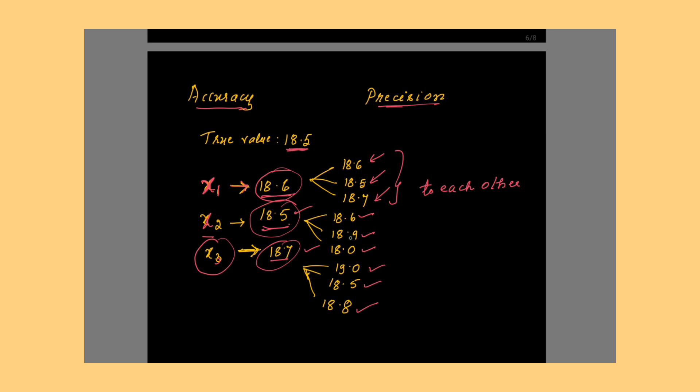But if you look here, the more precise values, first we will observe which is the most accurate value. Accurate value is obtained by student x2. Student x2 no doubt has got the accurate value, but the values are not precise. Because if you look here, 18.6, 18.9 and 18.0, they are too far from each other. Whereas for student x1, the value is 18.6, which may not be accurate, but the values are very much precise here. The closeness to each other, if you look, 18.6, 18.5, they are much closer. Finally, you check for x3, value is 18.7, which is not accurate, and even the values are not precise also. 19, 18.5, 18.8, they are not close to each other. Finally, the conclusion is: a model which is accurate may not have the precision and a model which is not accurate may be more precise.